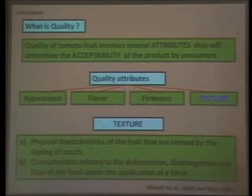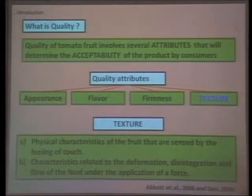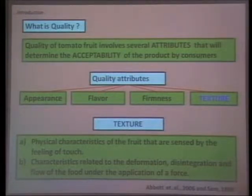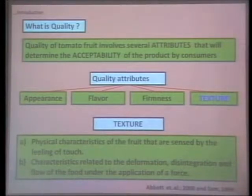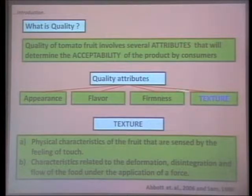Quality is any attribute that determines consumer acceptability — whether they reject or dislike the product. This includes how the fruit looks on the shelf, how it feels in our hands, but most importantly, how it feels in our mouth: how we perceive the flavor and the formation and disintegration of the fruit. The quality attribute that measures these characteristics is texture.